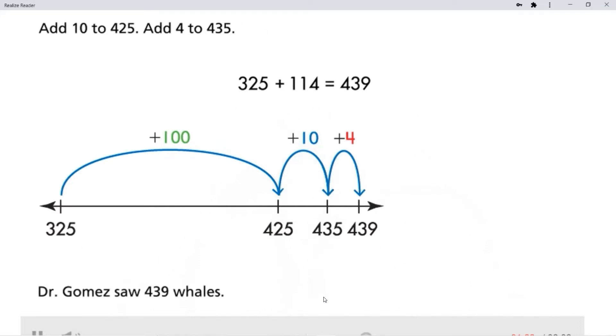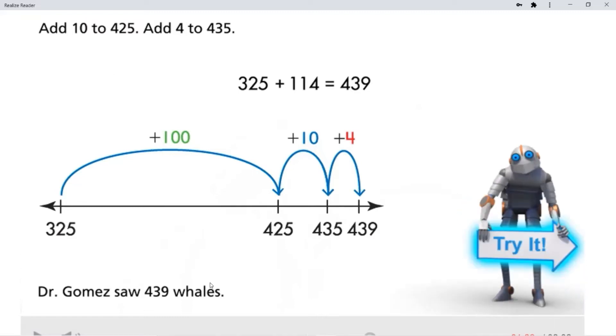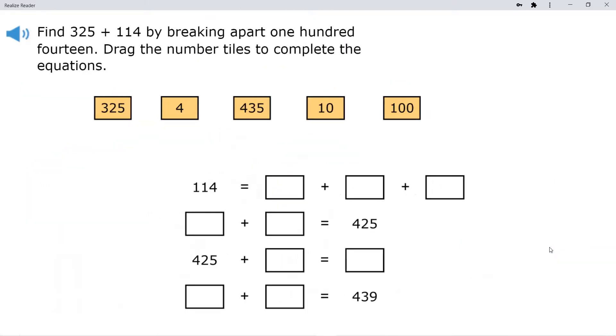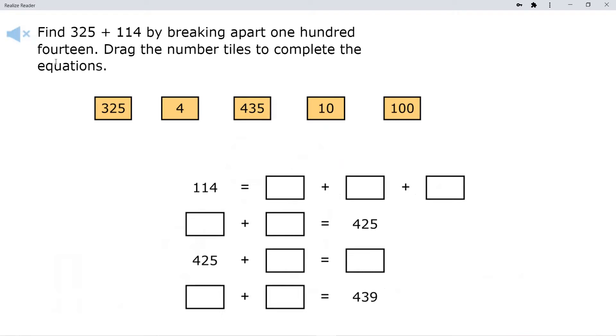Dr. Gomez saw 439 whales. Find 325 plus 114 by breaking apart 114. Drag the number tiles to complete the equations.